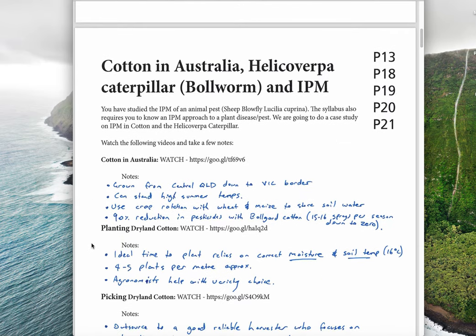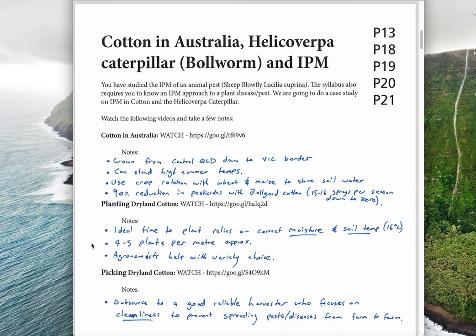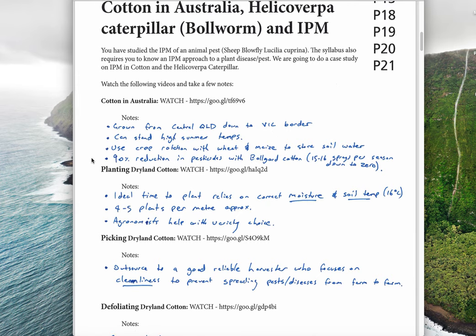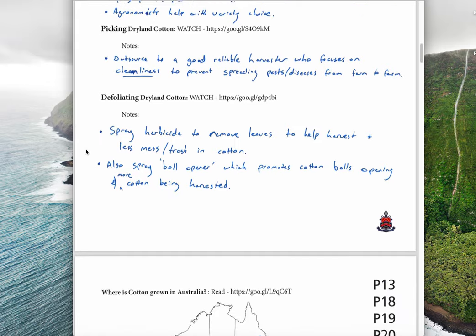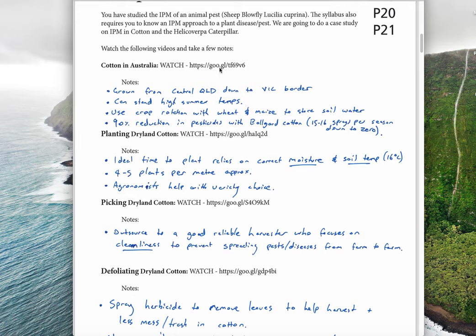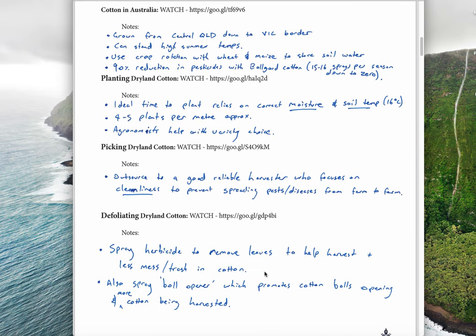Moving on, this is giving you a bit of an outline of cotton in Australia. So it's important to understand how we grow cotton. You've done this kind of thing before with sheep blowfly. You did Lucilia cuprina for the disease triangle. This is going to be our disease triangle of which cotton is going to be part of it.